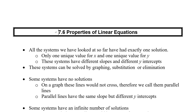Welcome to our last lesson in Chapter 7, Systems of Linear Equations. We're going to look at 7.6, Properties of Linear Equations. So far we've been looking at equations or systems that have exactly one solution — only one value of x and one value of y that satisfies both equations. What you might have noticed is that these systems have a different slope and a different y-intercept. So we need to be able to identify how many solutions each system has.